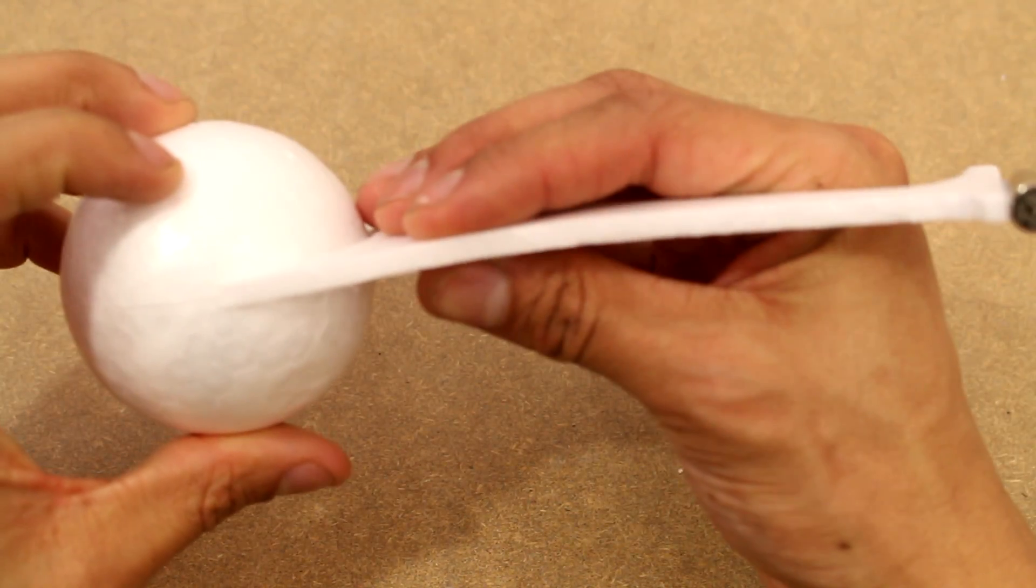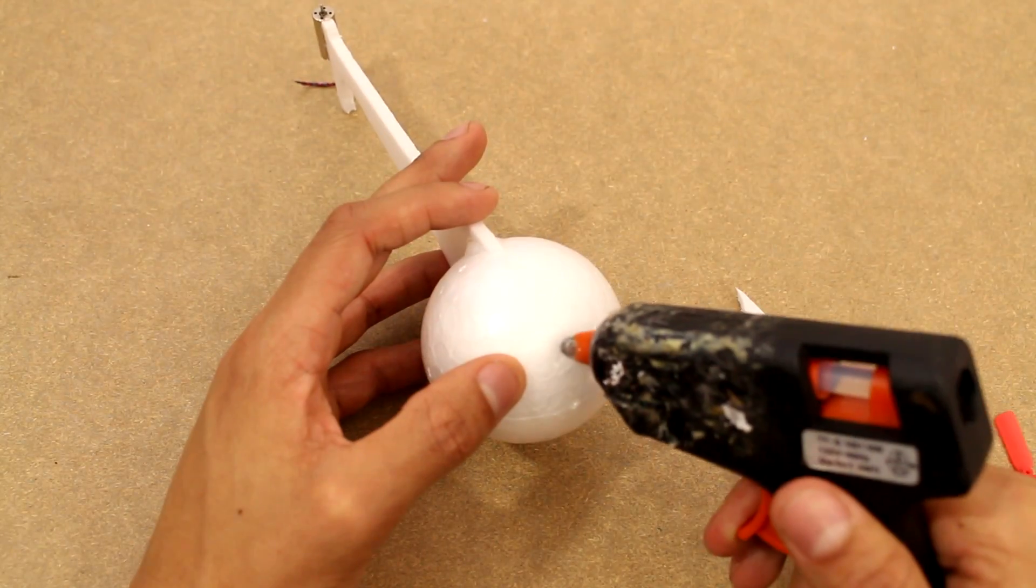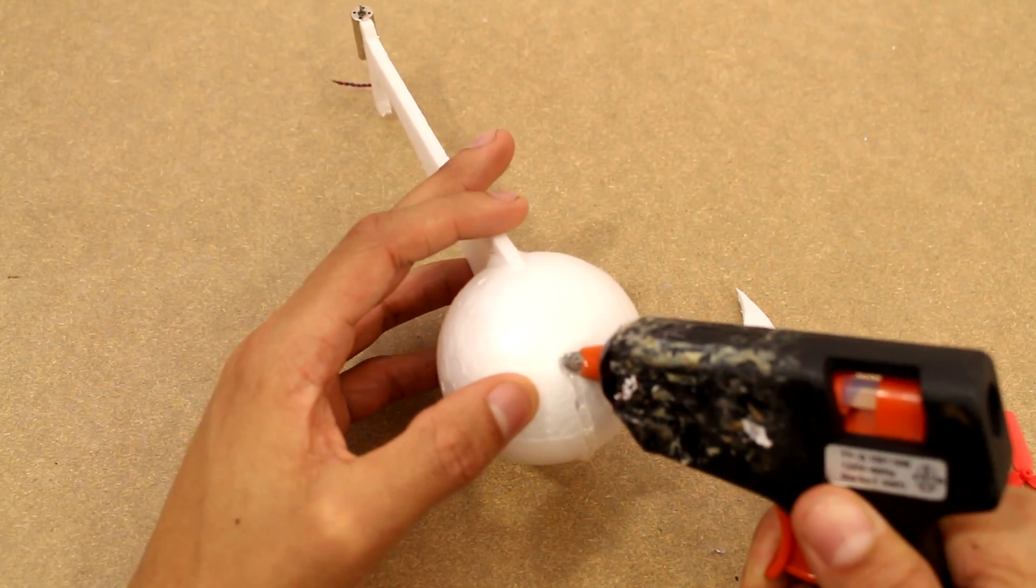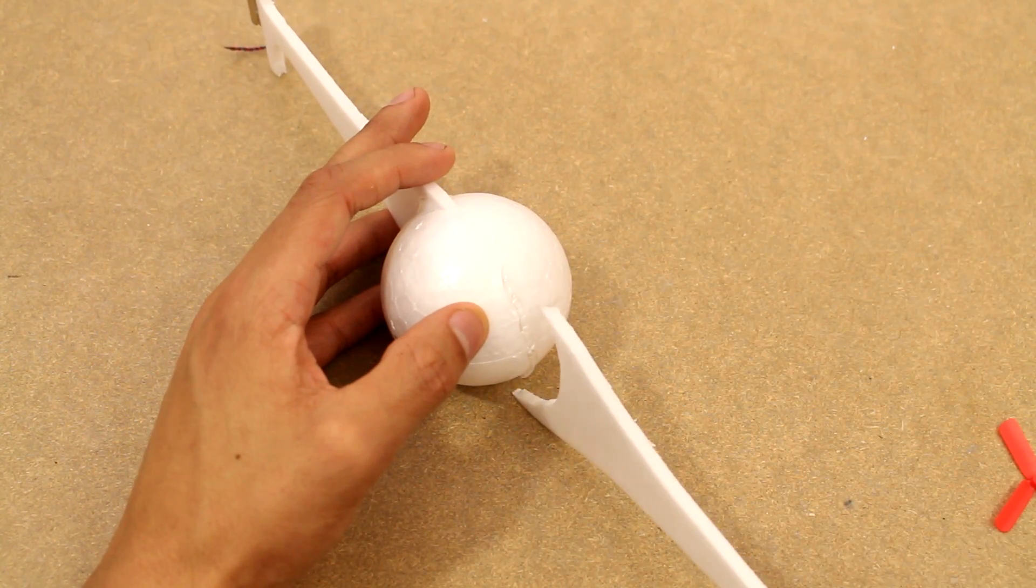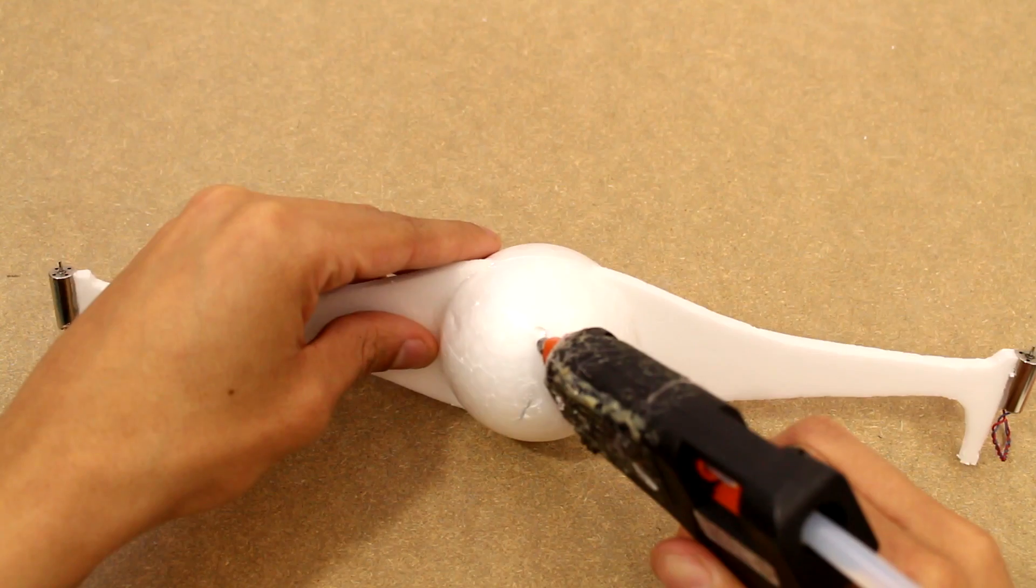Now it's important that you make sure it's perfectly symmetrical. Everything needs to be at the right angles. You don't want the angles to differ between arms, or else you're going to have an off-center lift.